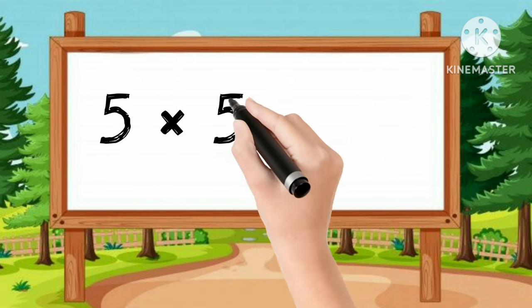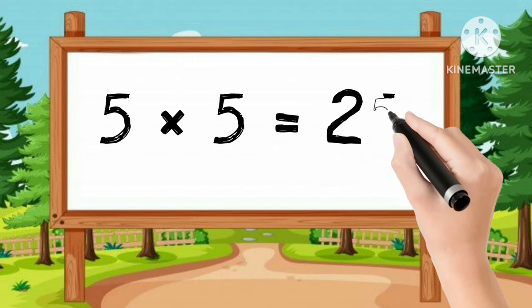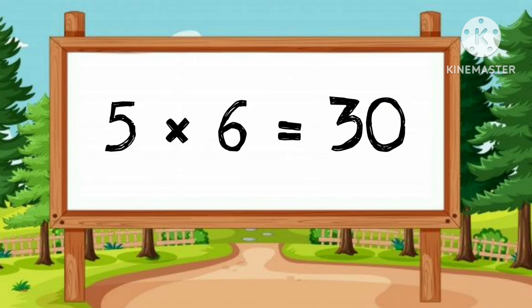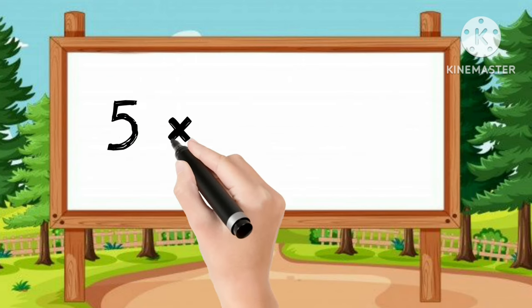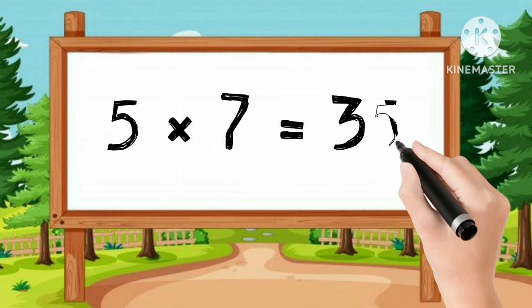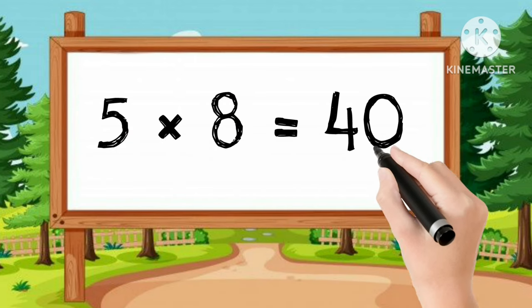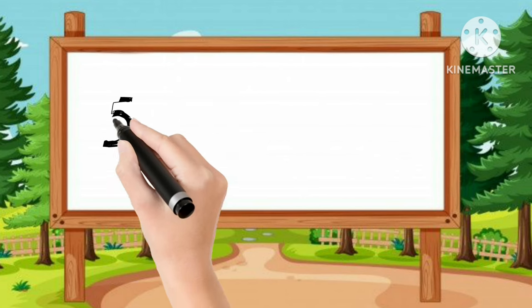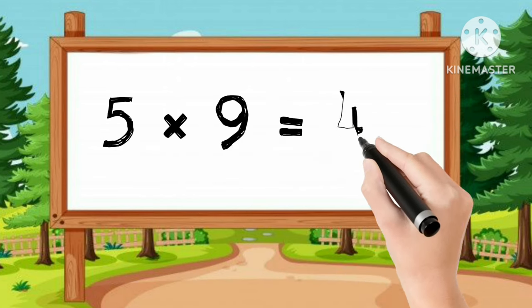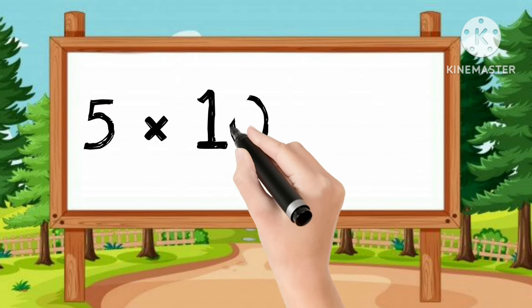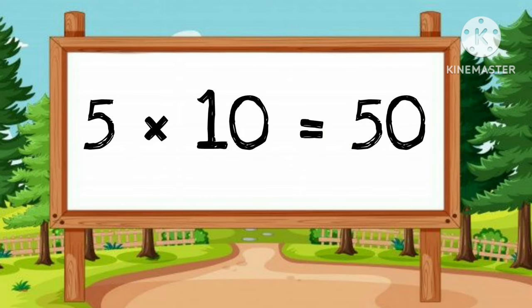5-5s are 25. 5-6s are 30. 5-7s are 35. 5-8s are 40. 5-9s are 45. 5-10s are 50.